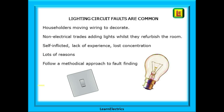So why do we have lighting faults? Usually because somebody has done something — for example, householders moving wiring to decorate with those famous last words 'don't worry, I can remember how they go back together,' or non-electrical trades adding lights whilst they refurbish the room, and self-inflicted from lack of experience or lost concentration. If you follow a methodical approach to fault finding, to inspection and testing, then you will find the problem. And always remember safe isolation of circuits before starting work.